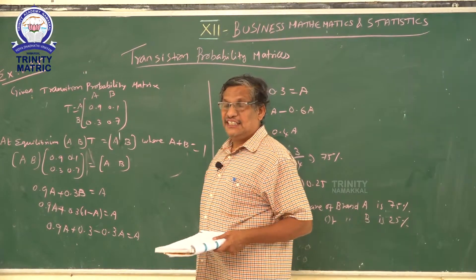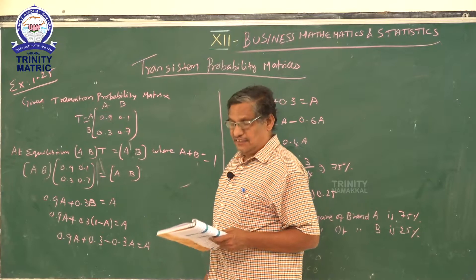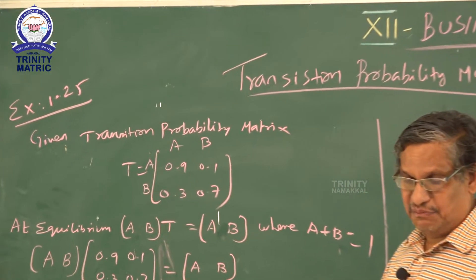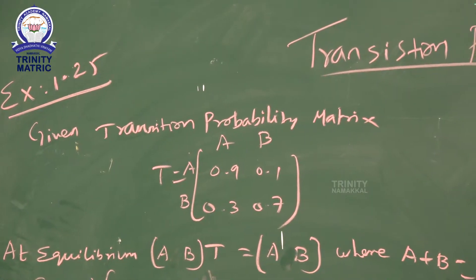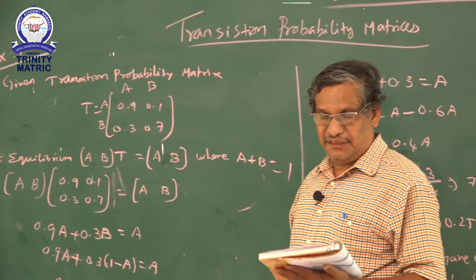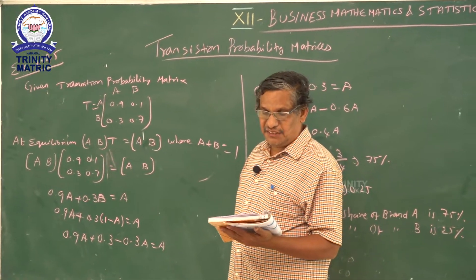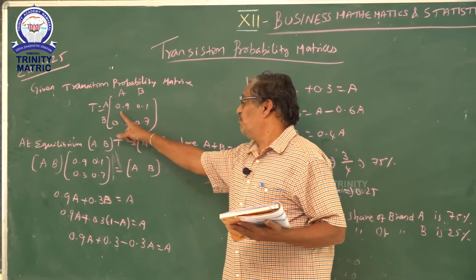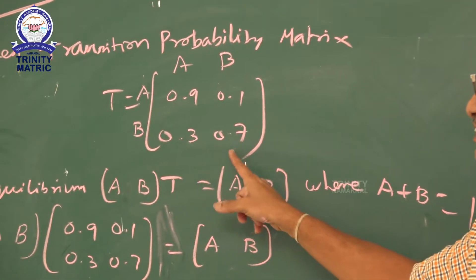Students, I am going to teach example 1.25. Consider the matrix of transition probability of a product available in the market of two brands A and B. The transition probability matrix is given as: A and B columns — first row: 0.9, 0.1; second row: 0.3, 0.7.